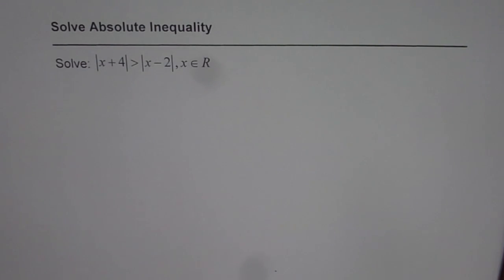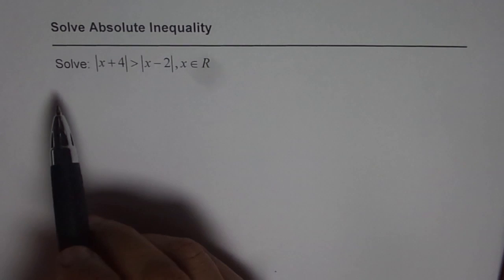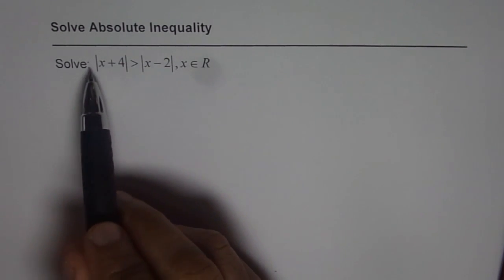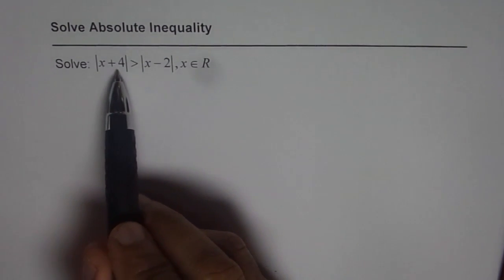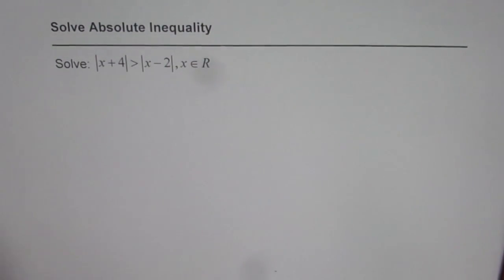In this example we will solve an inequality where we have two different absolute value functions. The question is: solve the absolute value of x plus 4 greater than the absolute value of x minus 2, where x belongs to real numbers.